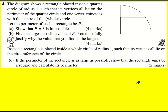We have an interesting optimization problem. The diagram shows a rectangle placed inside a quarter circle of radius 1 such that its vertices all lie on the perimeter of the quarter circle. One vertex coincides with the center of the whole circle — this bottom left one. Let the perimeter be p.